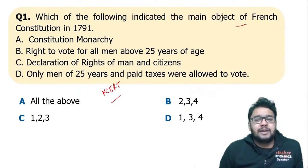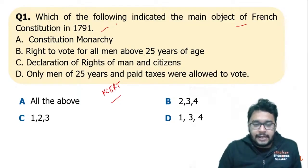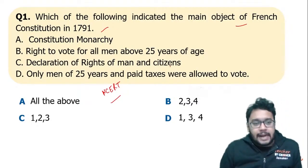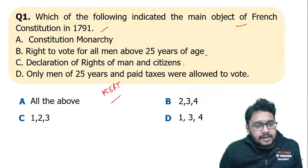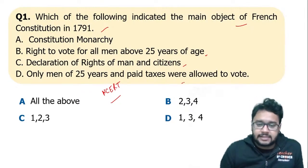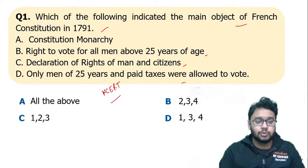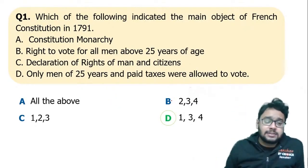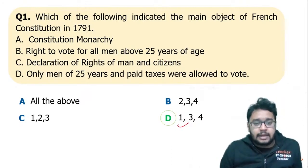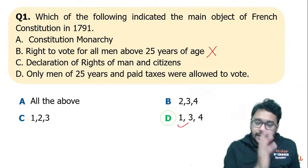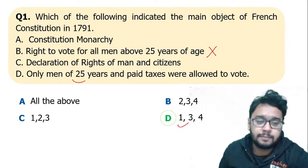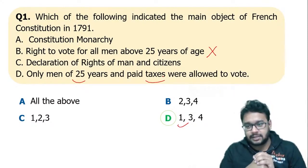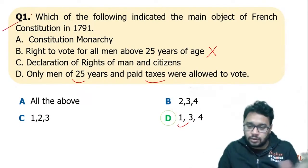The first question: which of the following indicated the main object of the French Constitution of 1791? The options were: constitutional monarchy, right to vote for all men above 25 years of age, declaration of rights of men and citizens, and only men above 25 who had paid taxes were allowed to vote. The answer is D — the right to vote for all men above 25 was not included; voting rights required paying taxes as well.